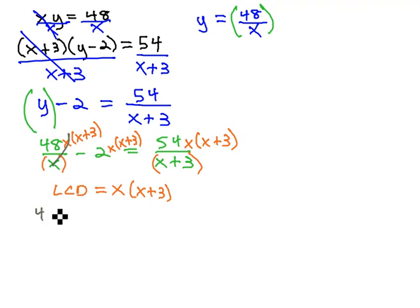The x's will divide out, and we get forty-eight times x plus three minus two x times x plus three equals, the x plus three is dividing out, fifty-four x.